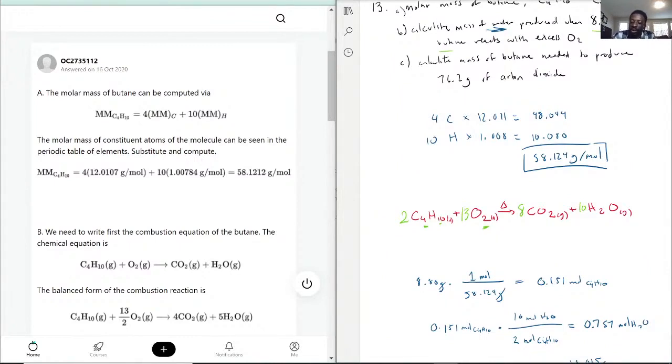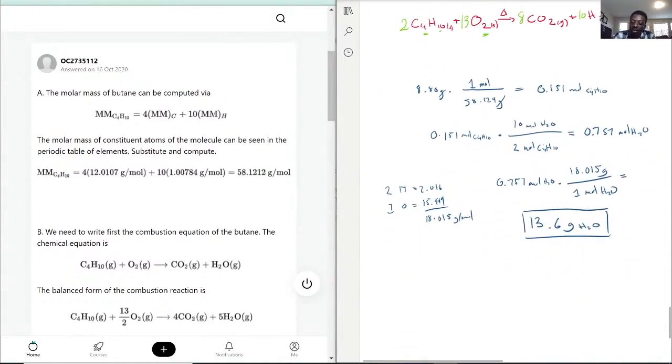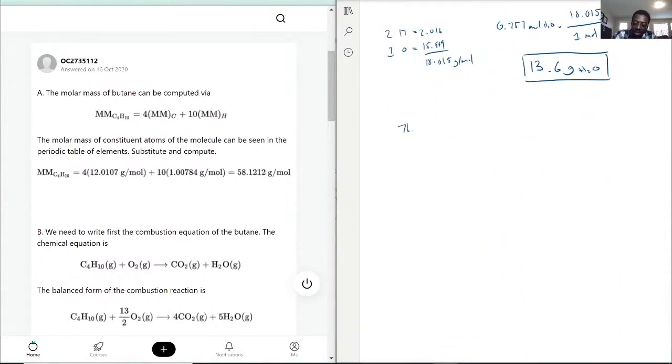Now they're asking calculate the mass of butane needed to produce 76.2 grams of carbon dioxide. So this one we have to work backwards. We know 76.2 and if we did the same thing, carbon dioxide is one carbon, two oxygen. That's 12.011 plus 31.998, add together, that's 44.009 for CO2.